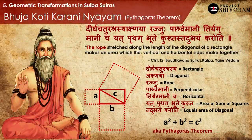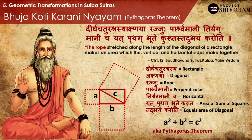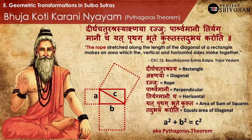Here is an axiomatic principle from Sulbhasutras to construct a right-angle triangle: Buja Koti Karani Nyayam. We know this as the Pythagoras theorem, but in Samskrutam it is called Buja Koti Karani Nyayam. Buja and Koti are the base and height of the triangle, and Karani is the diagonal. The rope stretched along the diagonal of a rectangle makes an area which the vertical and horizontal sides make together — this is what we call today as Pythagoras theorem.